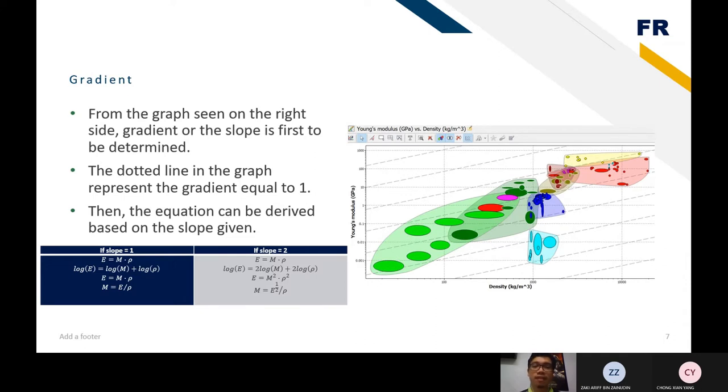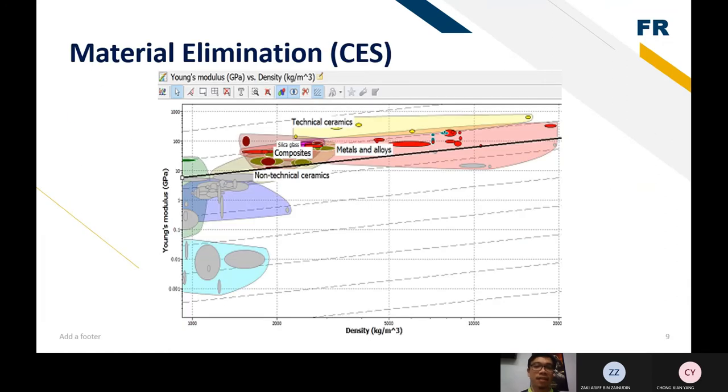From the graph, you can see from the graph seen on the right side, the gradient or the slope is the first step to be determined. The dotted line in the graph represents the gradient equal to 1. Then the equation can be derived based on the slope given. Here, if the slope equals 1, the material index is equal to M equals E over rho. But if the gradient equals 2, the M will be equal to square root E divided by rho. Here you can see the line. The thick line in the graph is in between 10 and 1, the value of 10 and the value of 1, because the Y axis value is equal to 6.6.